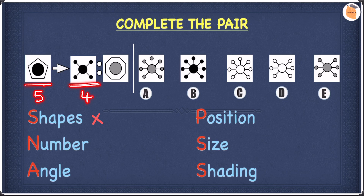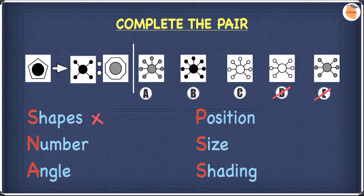So you must have one less small circle than the number of sides. Over here we have an octagon, which has eight sides, which means we'll have seven small circles. We can straight away cross off D and E because they only have six. Moving on to angle — none of the shapes are rotated, so we can cross off angle.